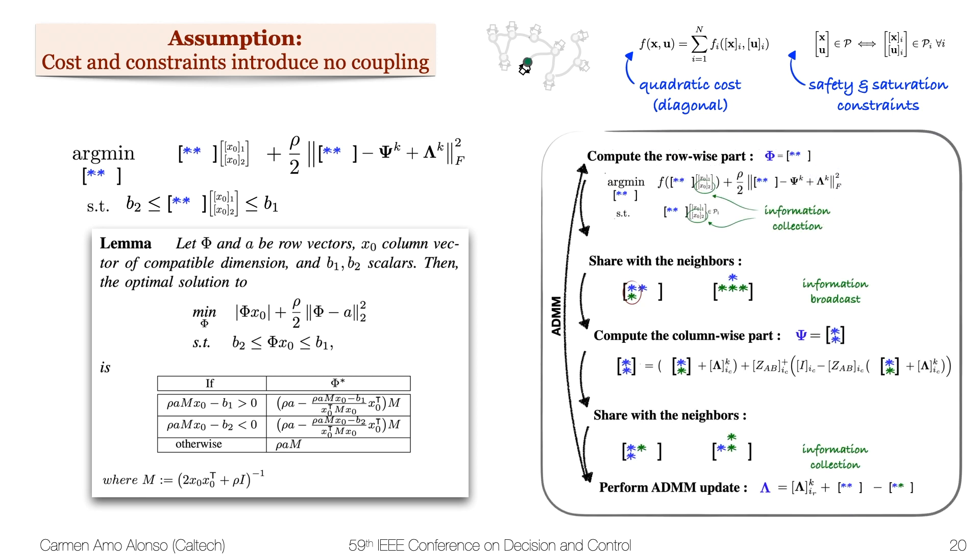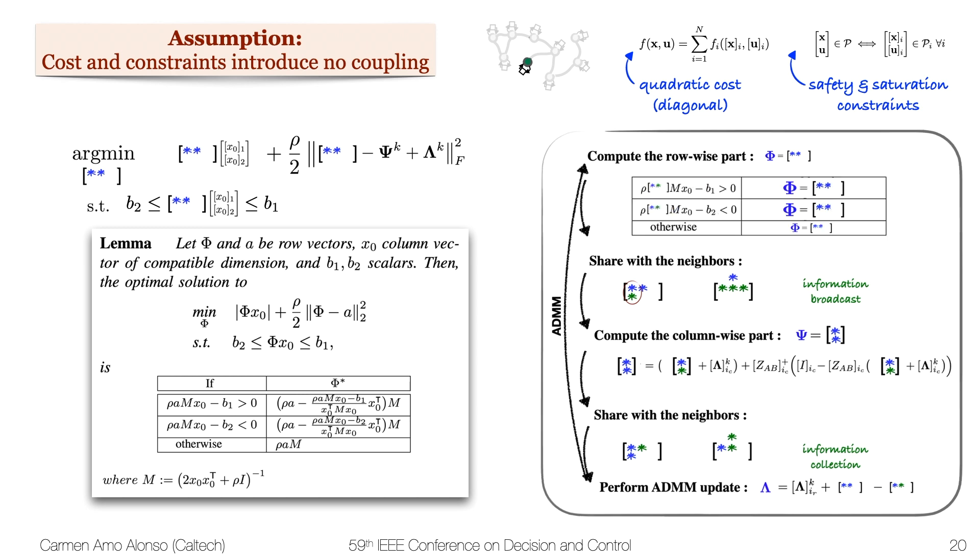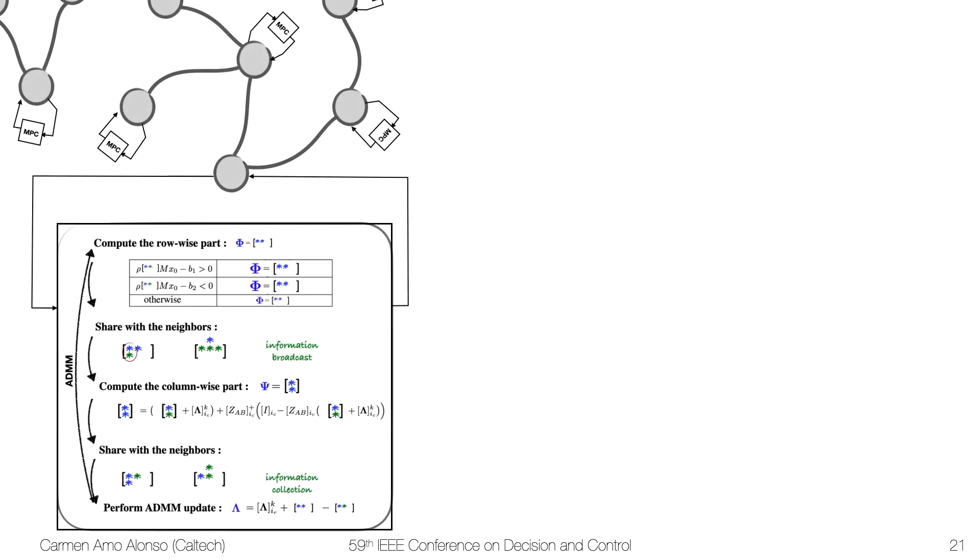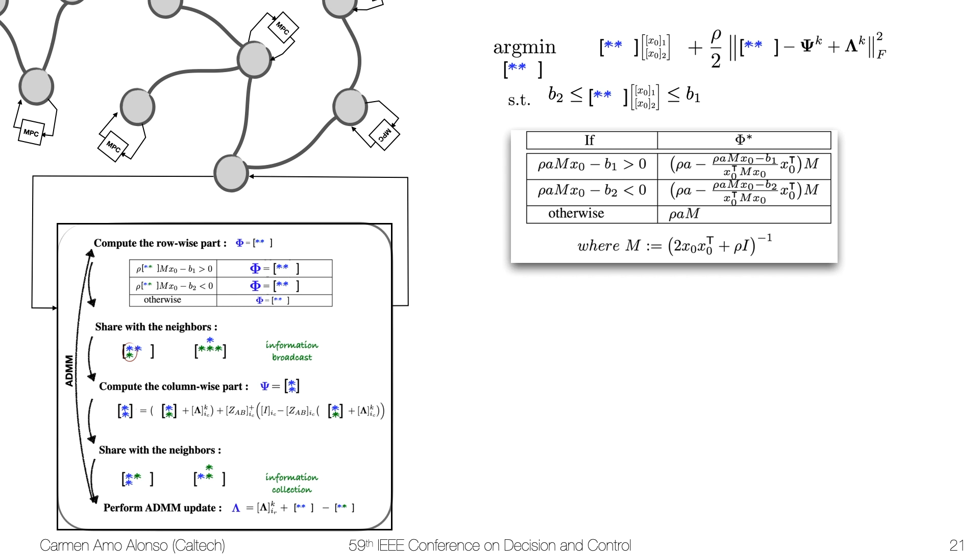So by using this lemma into the algorithm that we had, the first step just becomes a simple evaluation of a piecewise function. And let us see how this plays out in the actual MPC controller synthesis. So if we were performing the synthesis algorithm in this subsystem, and we were using the explicit solution that we found for the optimization problem, the solution in this case is not affine with the initial condition as it was in the standard explicit MPC. But once we know the initial condition, these terms can be computed, and so this expression becomes an affine expression of the ADMM variables, which changes several times every MPC iteration.